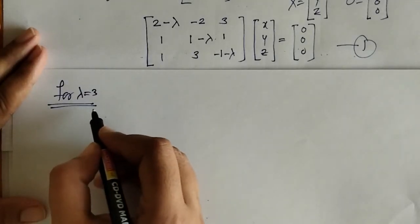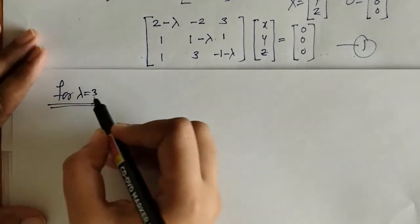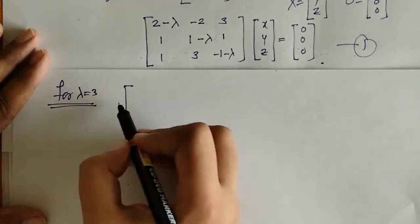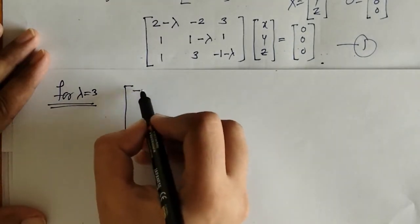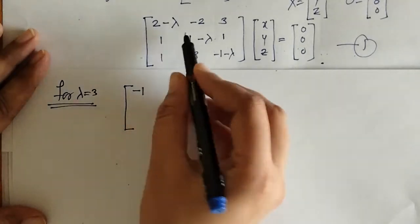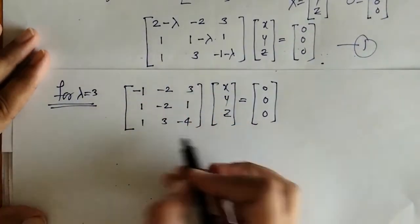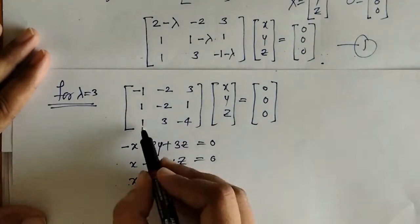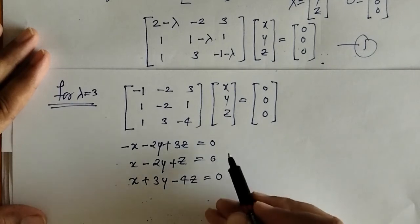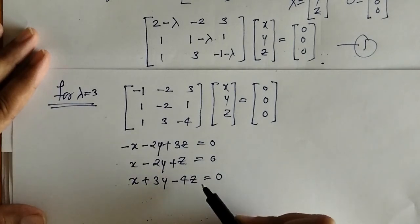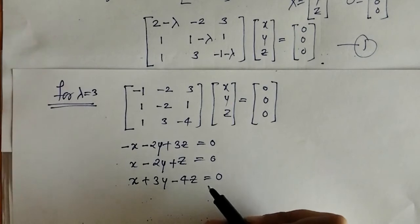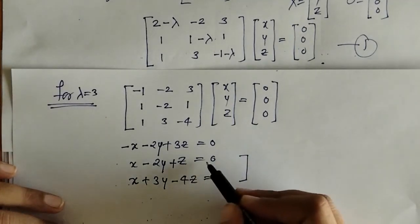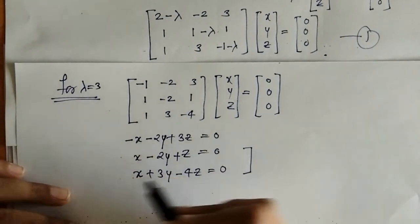Next, we find the eigenvector for lambda equals 3. We put lambda equals 3 into the matrix equation and simplify to get a system of homogeneous equations. We consider the last two equations to find the values of x, y, z.